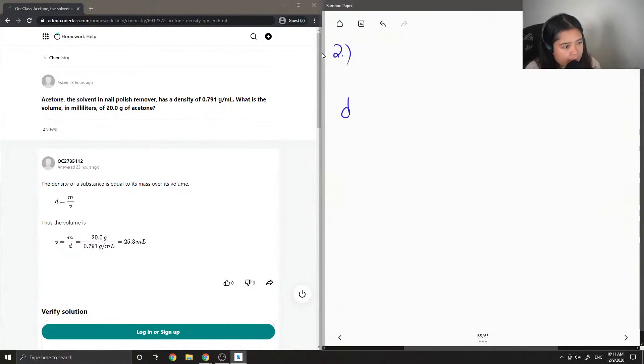Okay, so let's recall the formula that density is equal to mass over volume. So in this case, they gave us the density of acetone, which is 0.791 grams per milliliter.